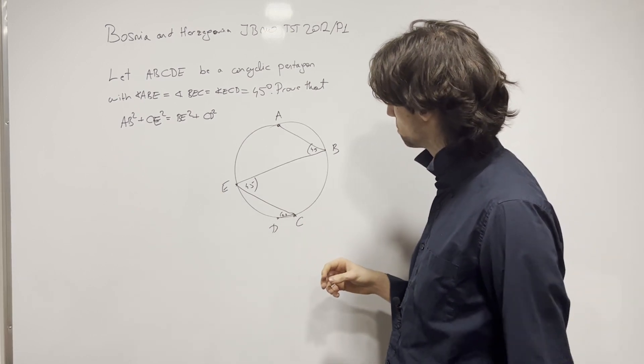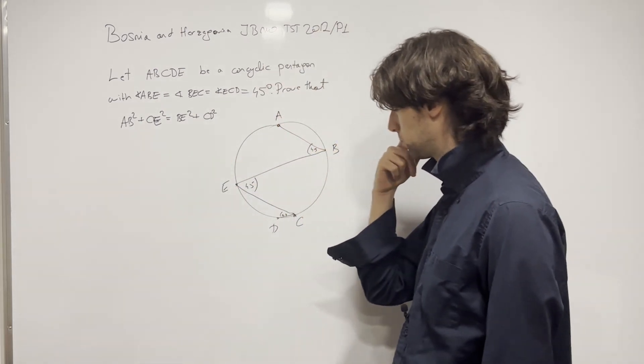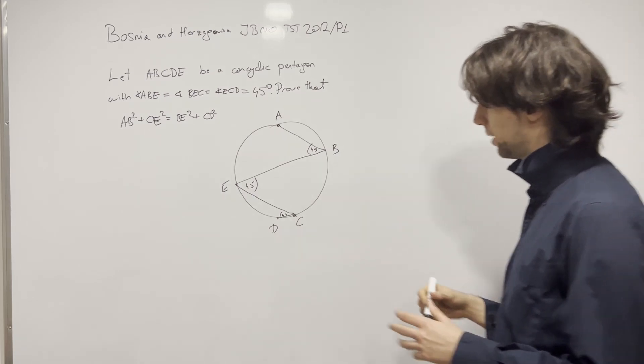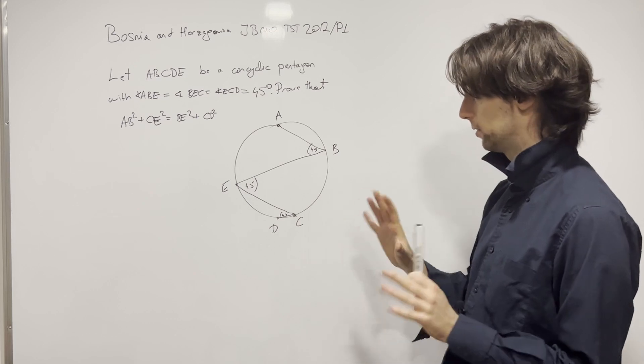And then we must prove what? We must prove this condition right here. AB squared plus CE squared. Now, the way to go about this problem is to first see what do we have with this very bad diagram? Mind you, we should have a better diagram.